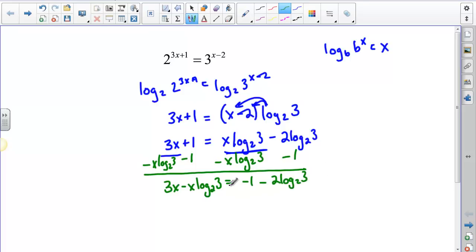This is good because all these are numbers. This is going to be a number. It's not an exact number, but it's a rounded number. And over here I've got my x's. The next step, which I think will make it pretty clear, is to factor out an x. If I have an x in both terms, I factor it out and I get 3 minus log base 2 of 3, and my right side is still negative 1 minus 2 log base 2 of 3.